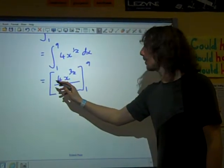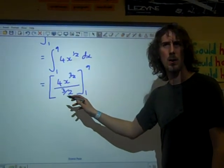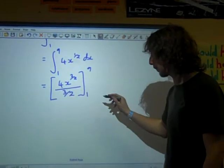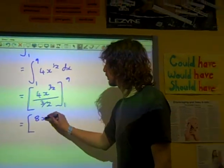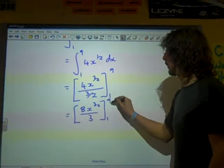Let's tidy this up a little bit first. This is four divided by three over two, which would be eight over three. Between one and nine.